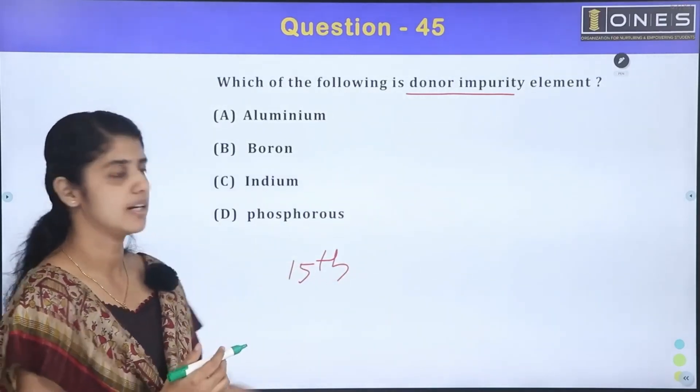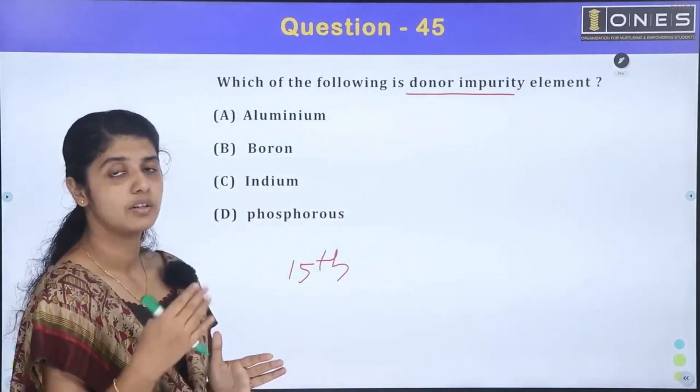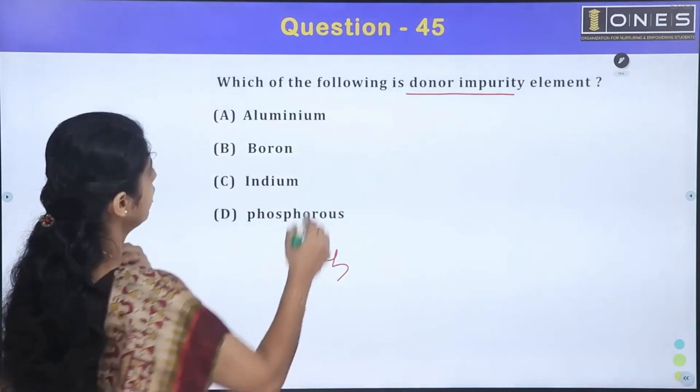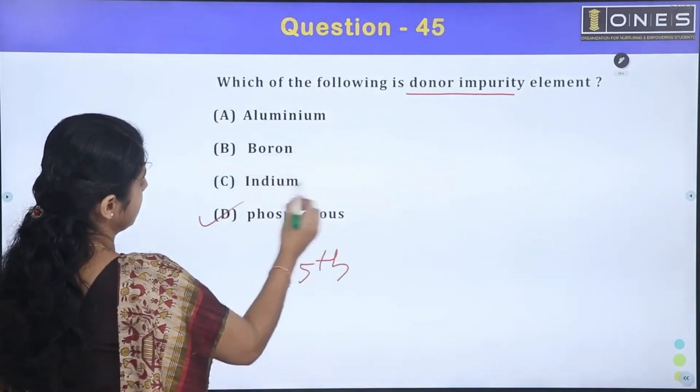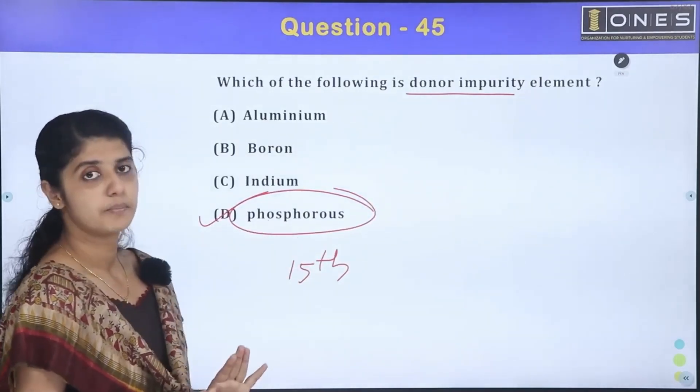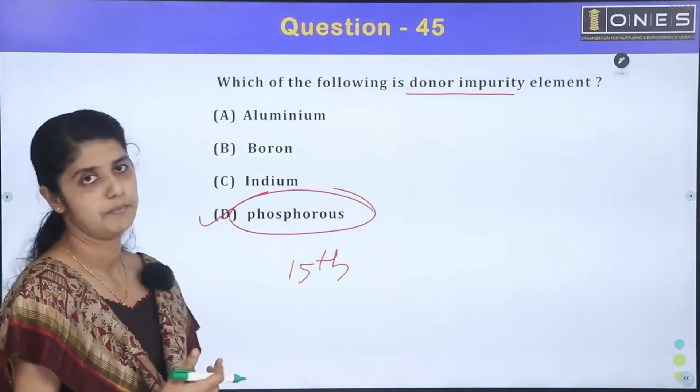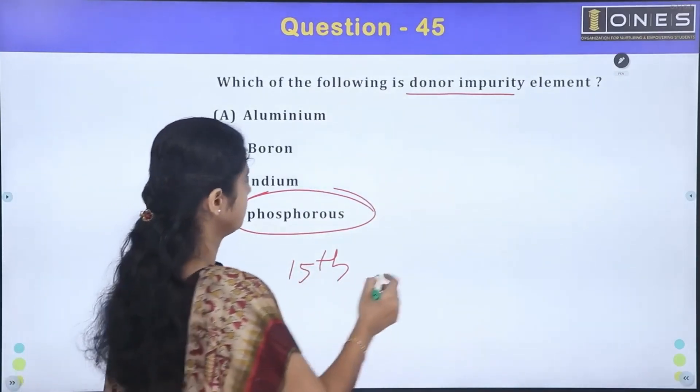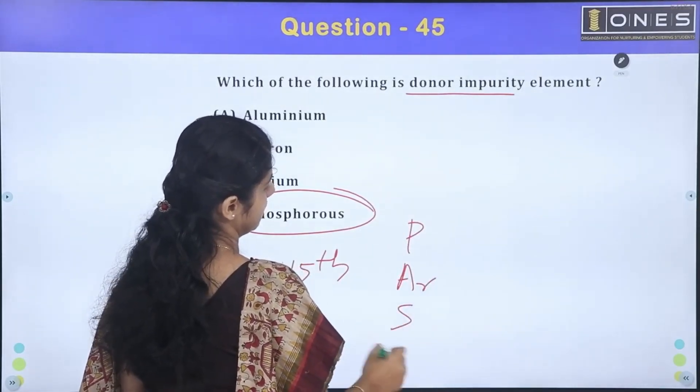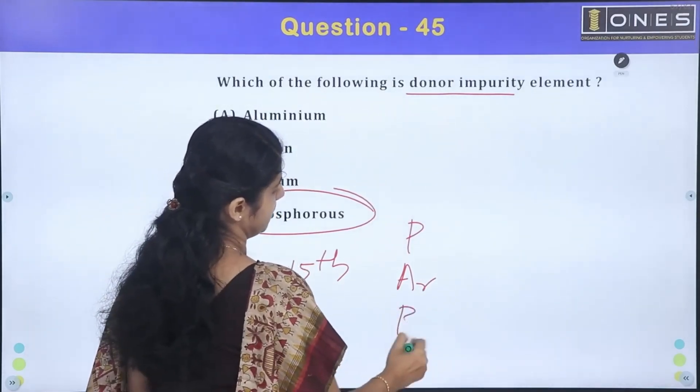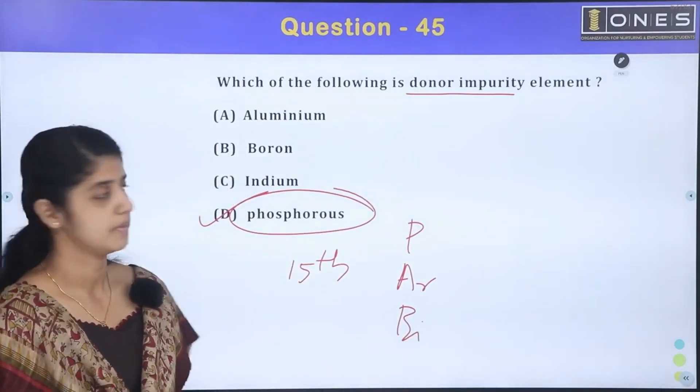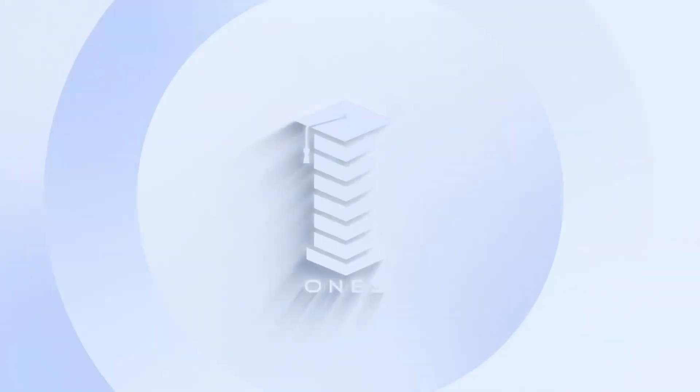This is a pentavalent atom. If you add a pentavalent atom, aluminum is trivalent, boron, phosphorous. What is the 15th group element? The 15th group element is pentavalent - it is donor impurity. Where are the donor impurities? Phosphorus, arsenic, bismuth, antimony. This is the example of pentavalent atom.